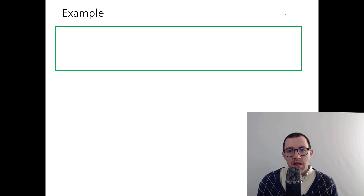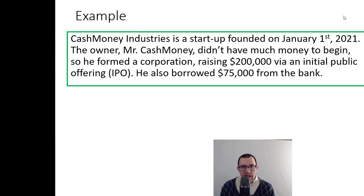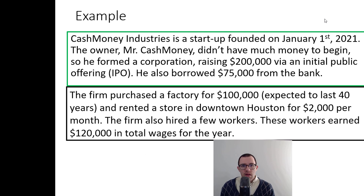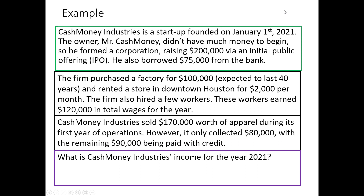Let's do a little example so you can see that accounting income is very different from cash flows. We have Cash Money Industries as a startup. He started off raising $200k with his IPO, borrowed some money from a bank, then bought a factory for about $100k, supposed to last about 40 years. He pays about $2,000 a month for rent for his store in downtown Houston, hires some workers paying them about $120,000 for the year, and sold about $170,000 worth of apparel this year, but only collected $80,000 of that, with $90,000 being sold on credit.